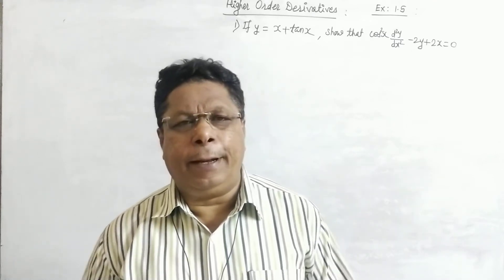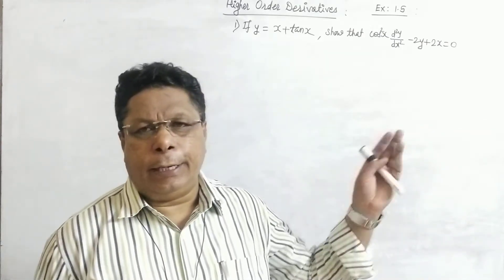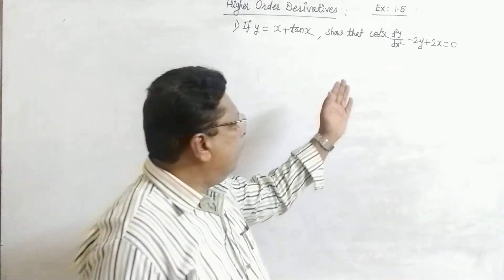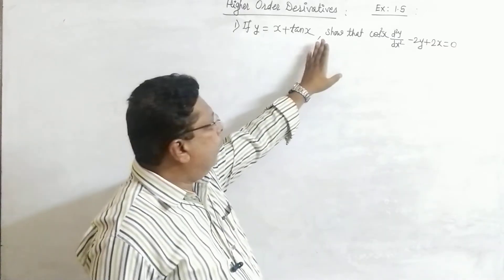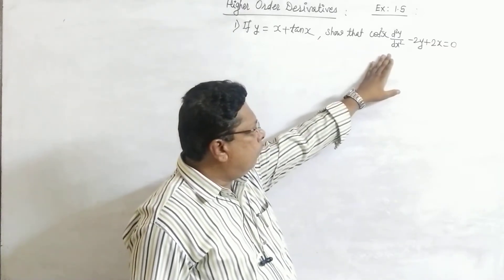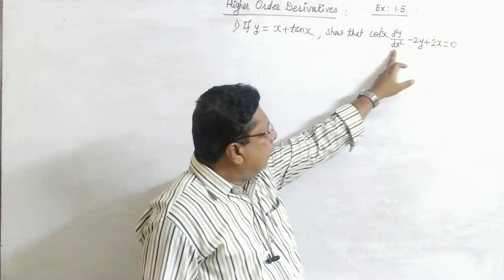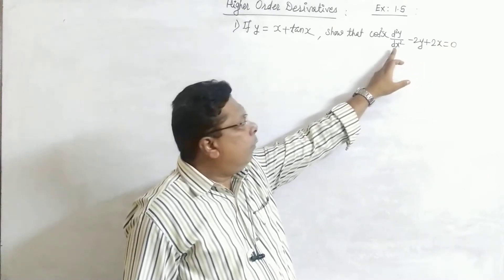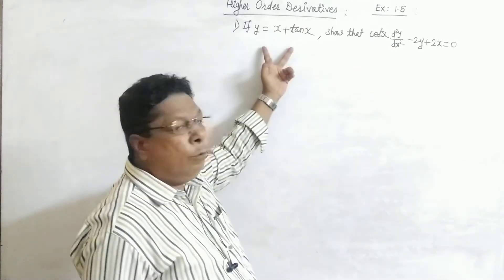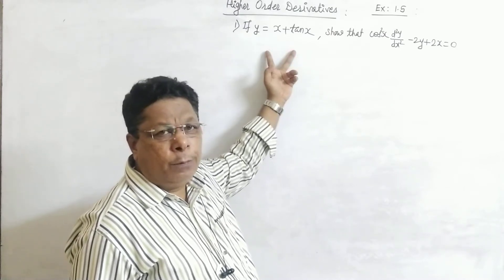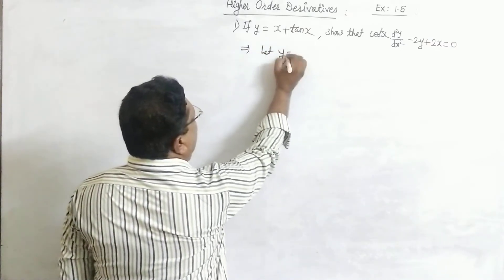Hello my dear students, welcome back again. We will continue our topic: derivatives of higher order, the same Exercise 1.5. One sum I have done here. If y equals x plus tan(x), then we have to show that cos²x · d²y/dx² minus 2y minus 2x equals 0. We have to find the second order derivative of y with respect to x, so we differentiate the given function two times.